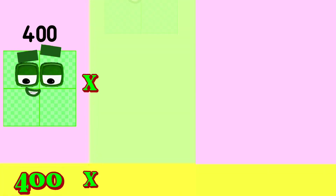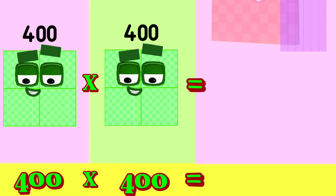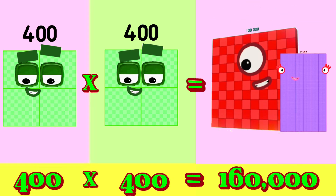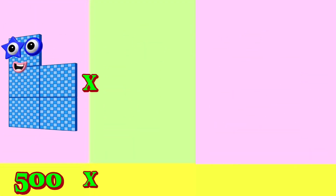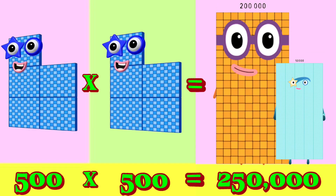400 multiply by 400 is equals to 160,000. 500 multiply by 500 is equals to 250,000.